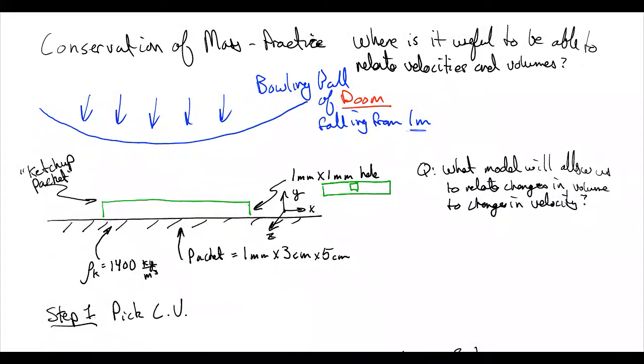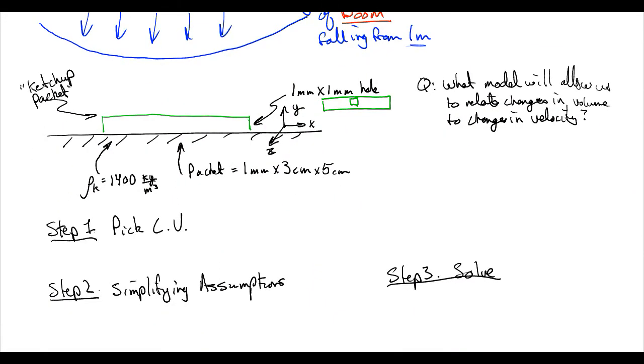Yeah, so let's talk about what this looks like. We're going to assume our ketchup packet is equal to a rectangle, basically. The density of ketchup is 1,400 kilograms per meter cubed, and yes, that is the actual density of ketchup. The packet is 1 millimeter thick by 3 centimeters into the page by 5 centimeters long. And we're going to assume that there is a 1 millimeter by 1 millimeter hole in the end of it, just like this, for the ketchup to exit. We're going to assume that this models a small tear in the ketchup packet.